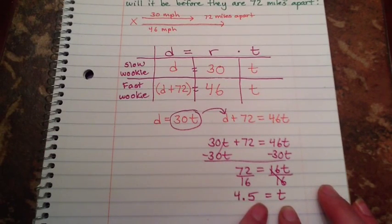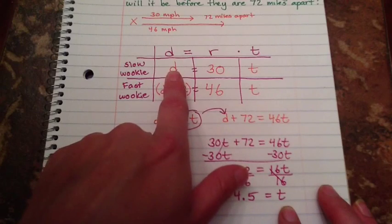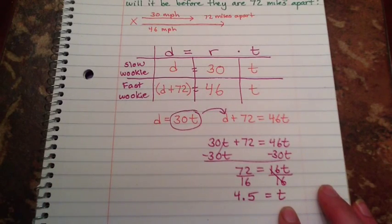If I wanted to find my distance, how far they actually went, plug in 4.5, multiply it by 30, I get the distance of the slow wookie. And then I can add 72 to get the distance of the fast wookie. But it didn't even ask me for that.